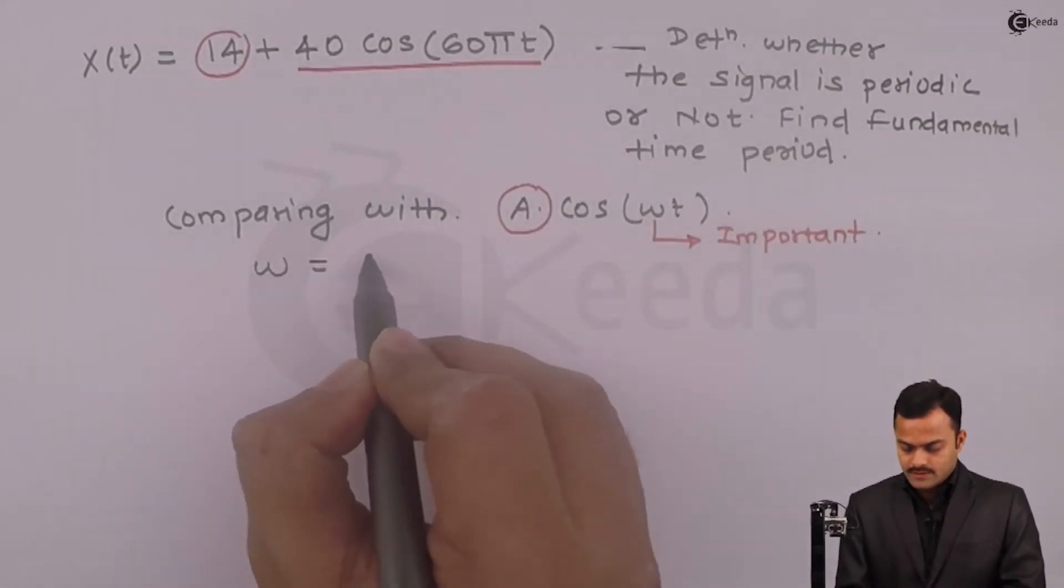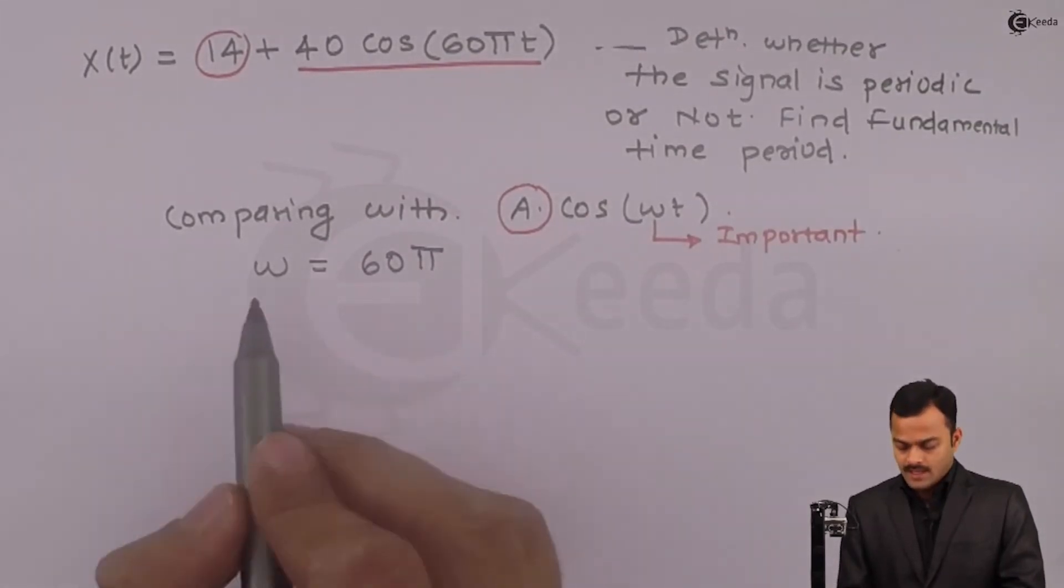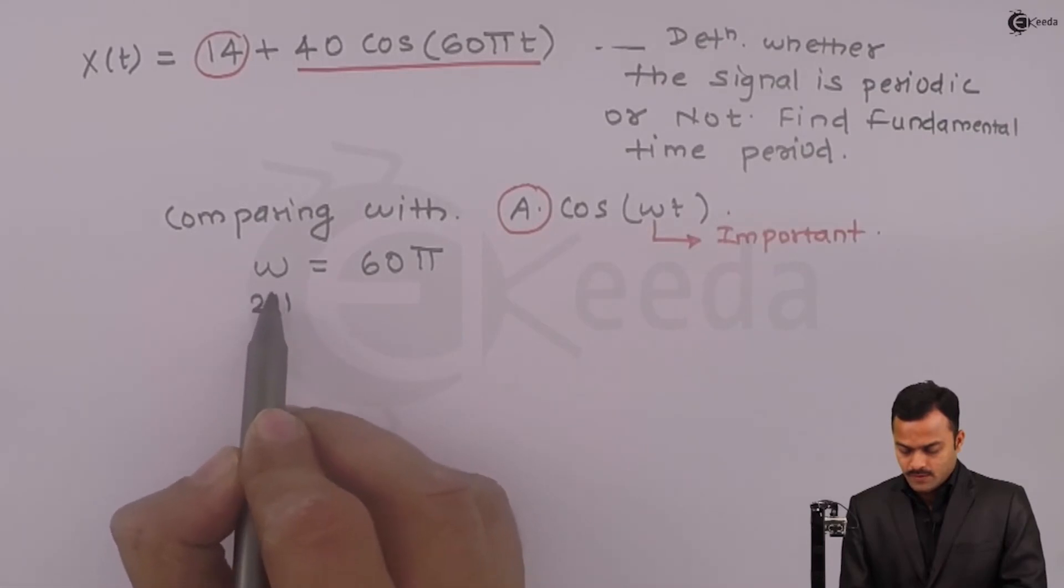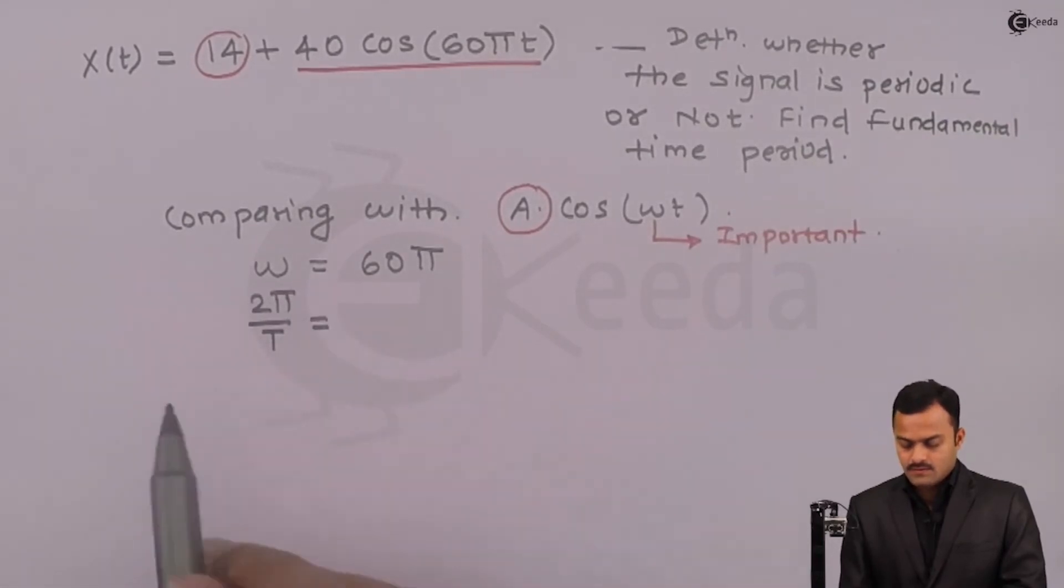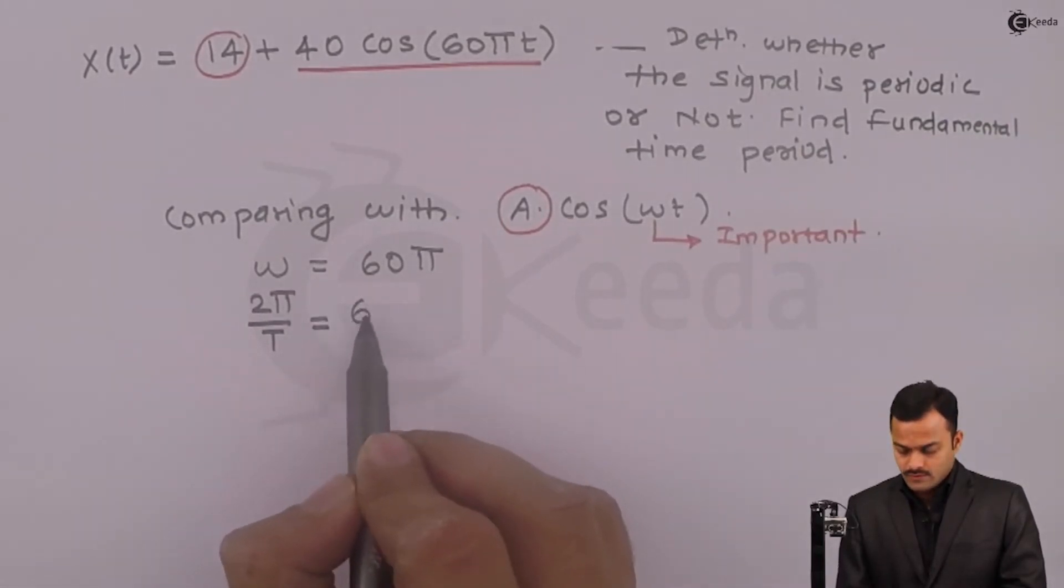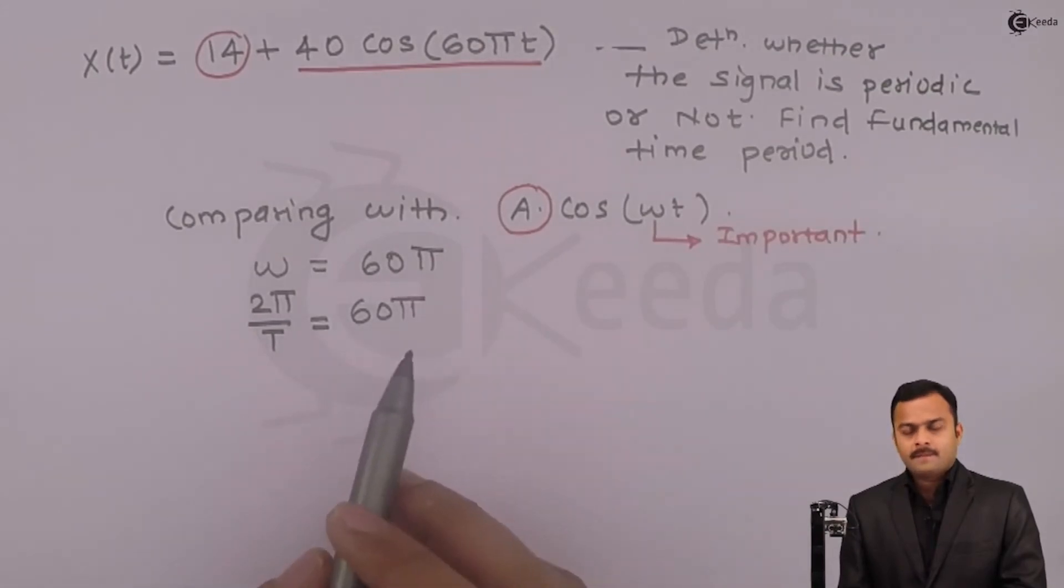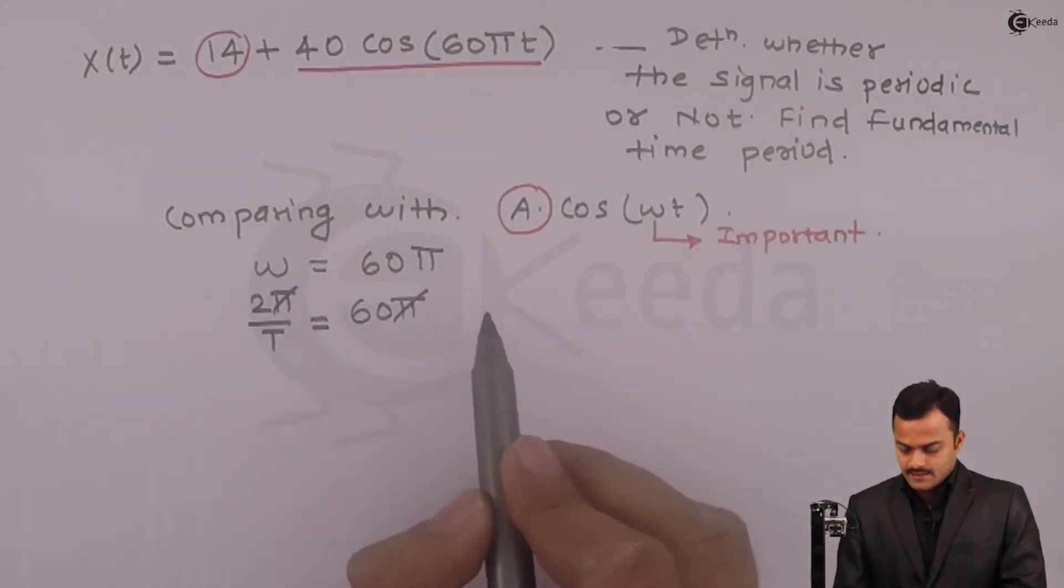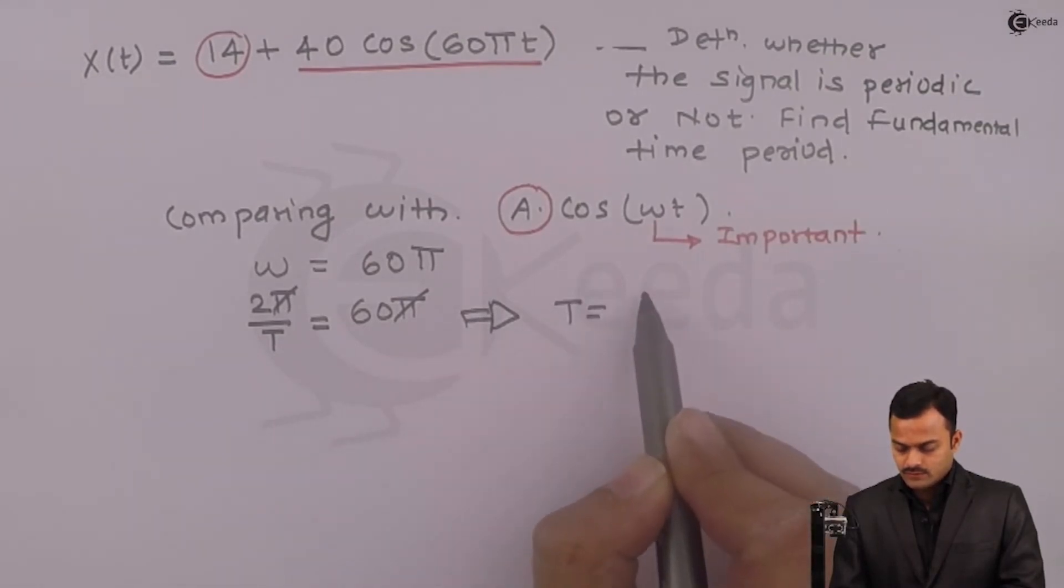So I will get omega at 65, and omega is given by 2π/T which is equal to 65. Pi gets cancelled. If I solve this, it will give me T equal to 1 upon 30.